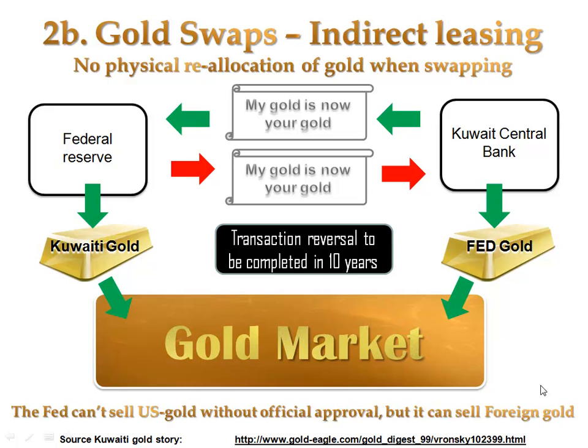Provided the central bank is swapping the same quality gold, it is not necessary to physically reallocate the gold and transport it from Kuwait to the US and vice versa. In this example, the swap of gold is just an accounting trick.